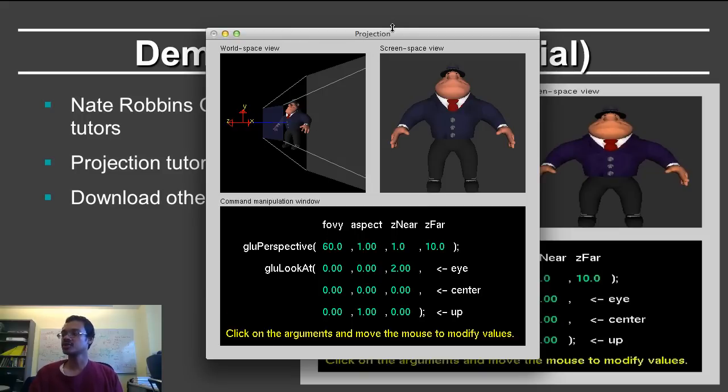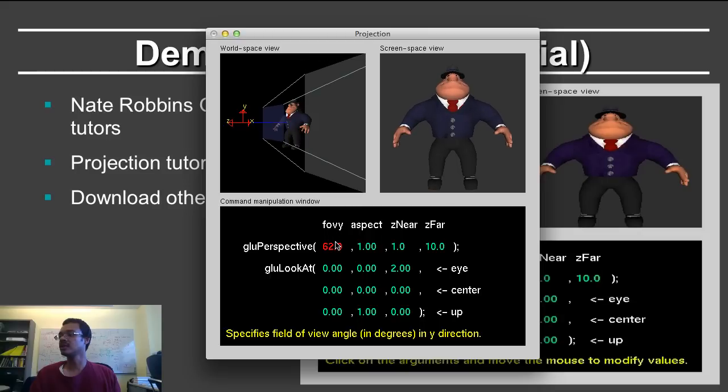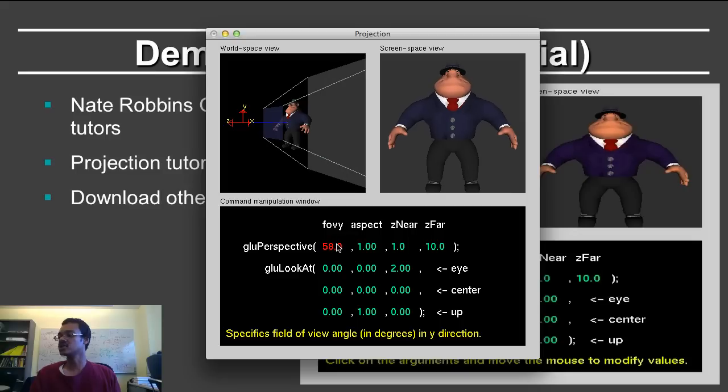So here we have our projection tutorial, showing the world space view on the left and the actual image that you see on the right. I can increase the field of view, and as I increase the field of view, you see that the man becomes smaller. As I decrease the field of view, he becomes larger. That's because I'm looking at a smaller region. That is one parameter of my viewing transformation.